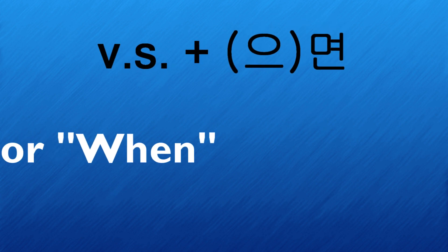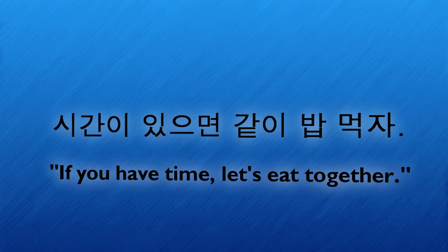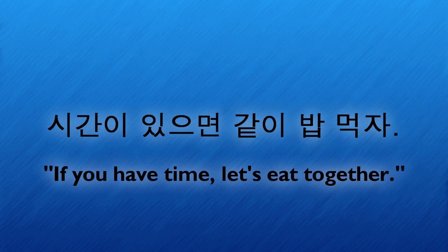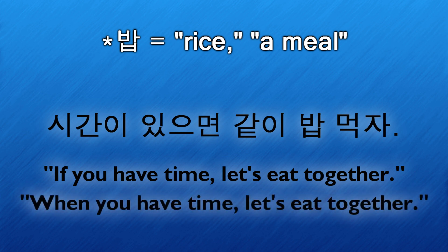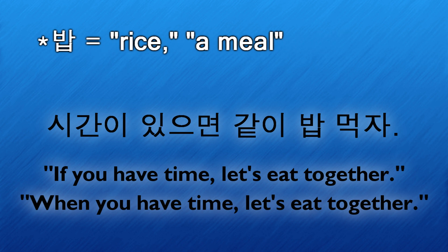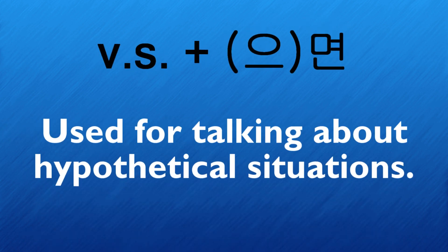Now that you know how to conjugate these two forms, let's go over how they're different. The 면 form can literally mean either 'if' or 'when.' However, in English these can sometimes be interchanged — take the sentence 'If you have time, let's eat together,' which could also be said as 'When you have time, let's eat together.' The 면 form is used for stating a hypothetical situation, so it sometimes translates as 'if' and other times as 'when.'